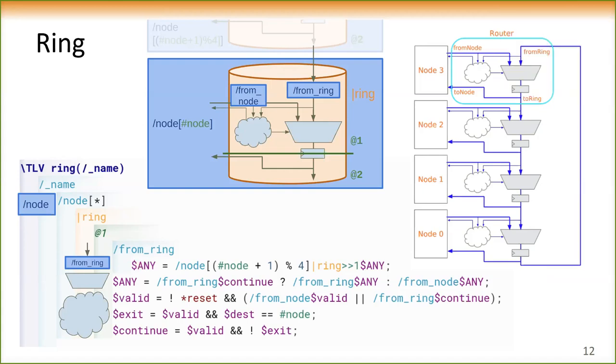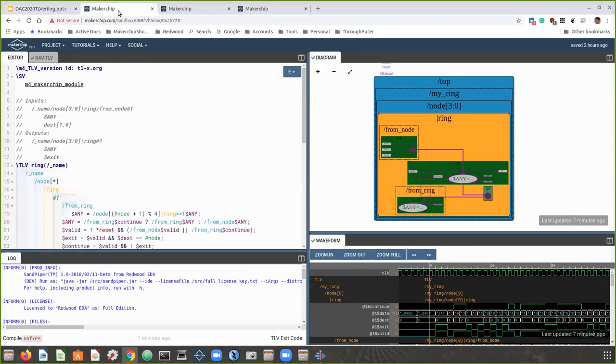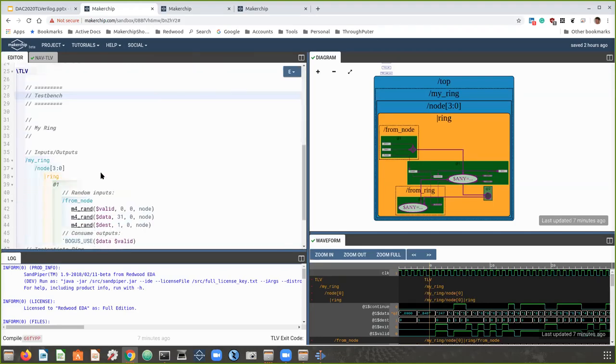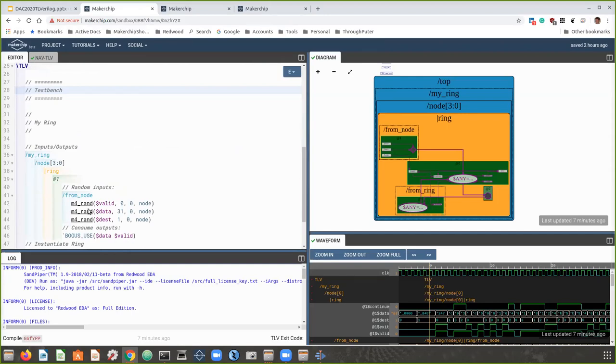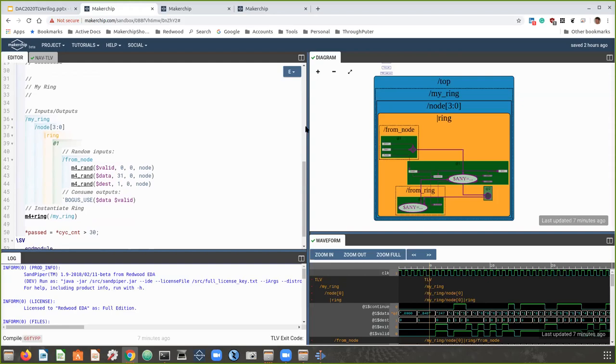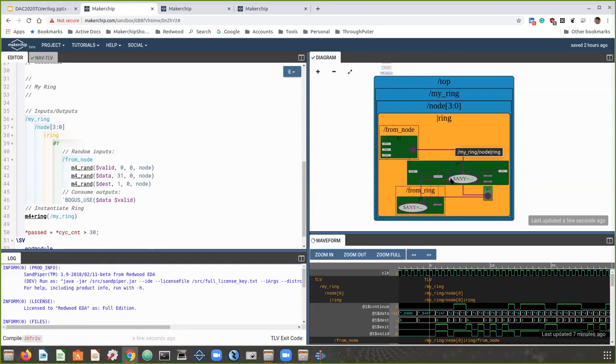Now we move on to tools and I'm going to actually exit out of my presentation here into my web browser where I've got a couple sessions of MakerChip up and running. MakerChip is a platform that's provided by Redwood EDA for open source development of TL Verilog and Verilog models. And I've opened up the design that we were just looking at in the presentation. And it's also got a little test bench here, just driving random stimulus to the inputs in from node and instantiating the ring. When I compile this, which I've already done, but I'll kick it off again, I get a logic diagram of my design.